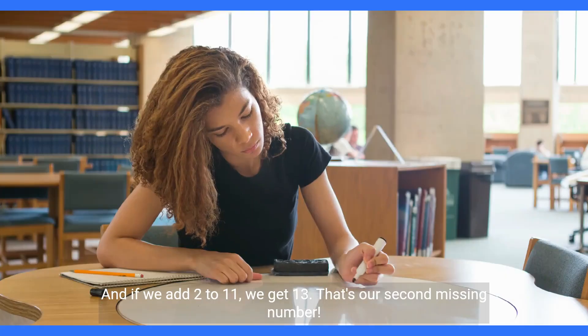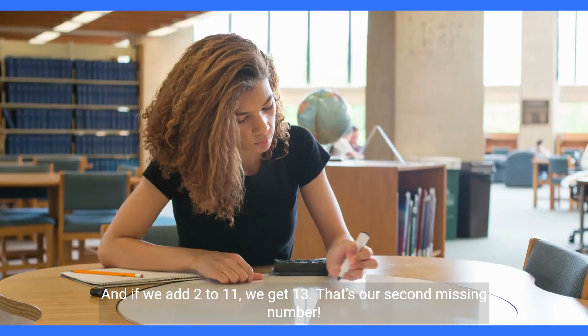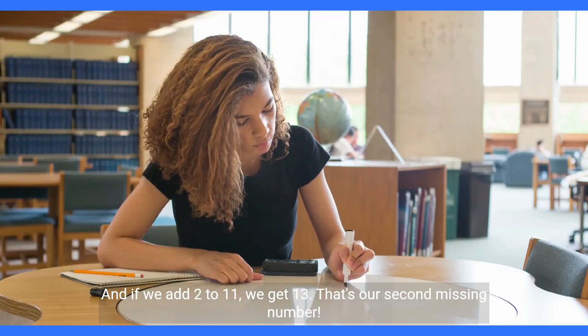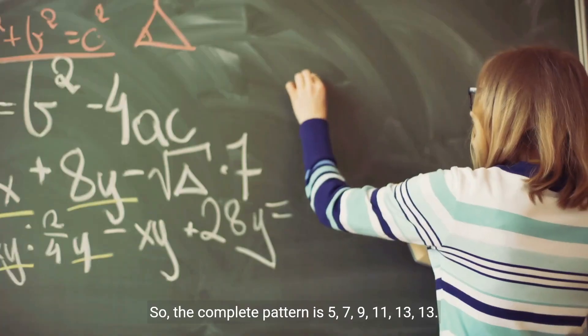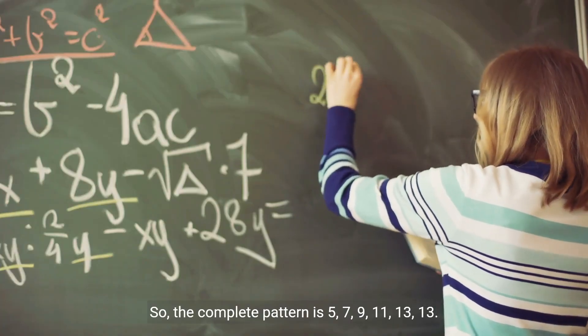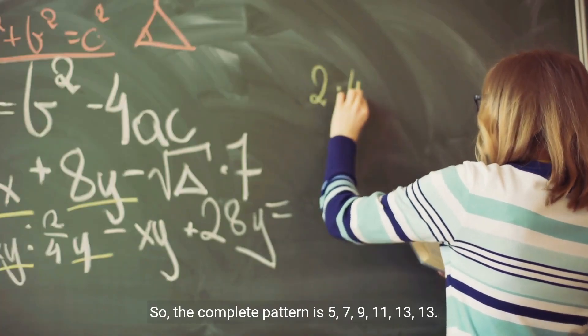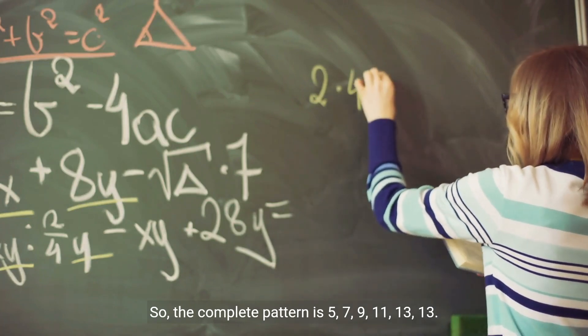And if we add 2 to 11, we get 13. That's our second missing number. So, the complete pattern is 5, 7, 9, 11, 13.